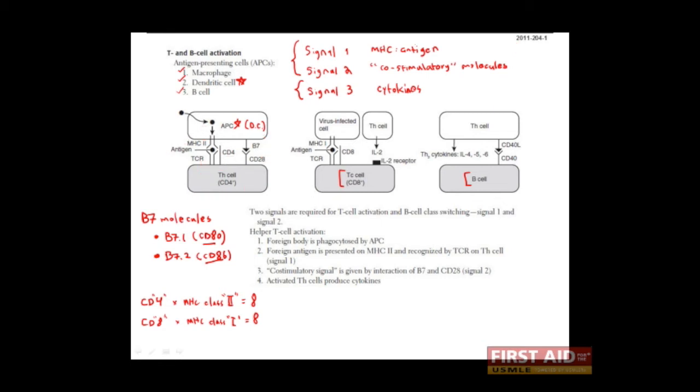You may be wondering why two signals are required to activate a T cell. The explanation that immunologists have come up with goes like this. If only one signal were required to activate a T cell, so that only antigen bound to MHC molecules were required, we'd have a system that looks like this. The problem with this is that for as good as negative selection is at eliminating auto-reactive T cells, that is T cells which have the potential to recognize self-peptides, it is not perfect.